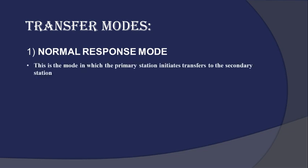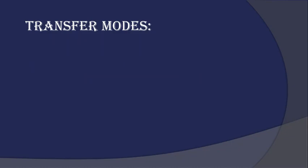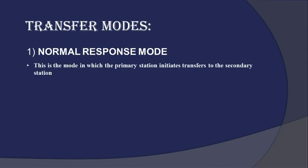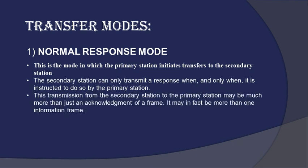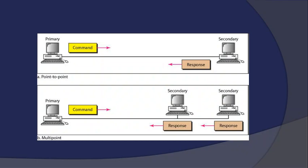Now let us see the transfer modes. There are three types of response modes. In normal response mode, the primary station initiates transfers to the secondary station, and the secondary station can only transmit a response when instructed to do so by the primary station. The primary station has two types: point-to-point and multipoint. In point-to-point, a command is given from primary to secondary and only one user receives the command at a time, with the response traveling back to the primary. In multipoint, the primary can send commands to various users simultaneously and receive responses back from multiple users at the same time.